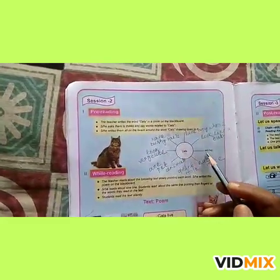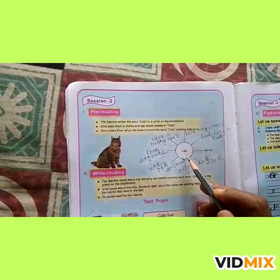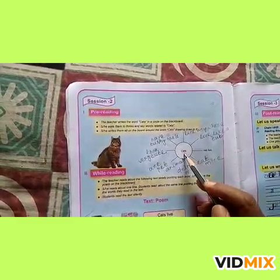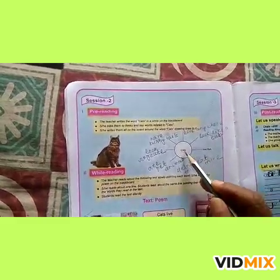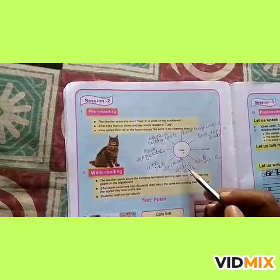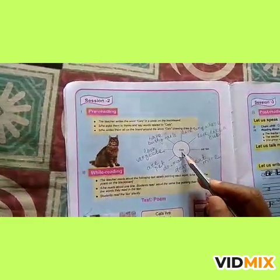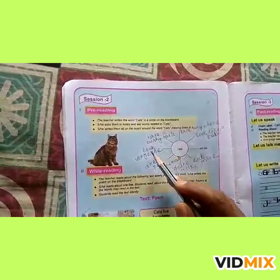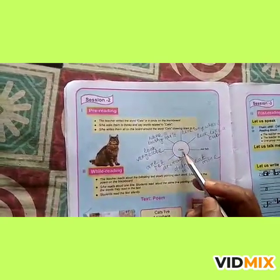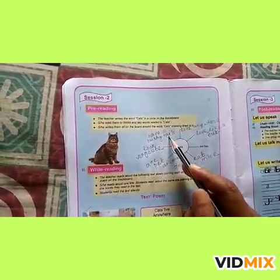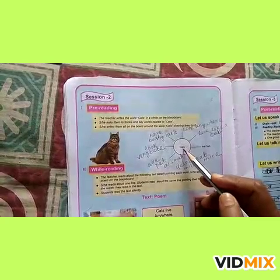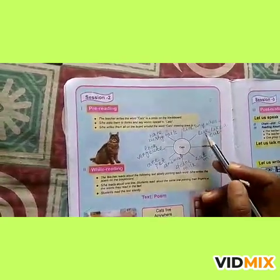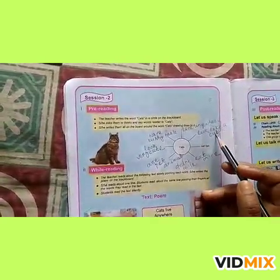Just like cats eat fish, you can also write: cats eat mice, cats drink milk, cats are pet animals, cats look very cute, cats have bushy tails, cats live anywhere.